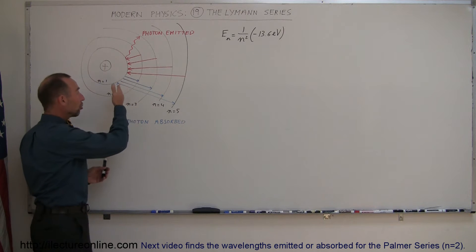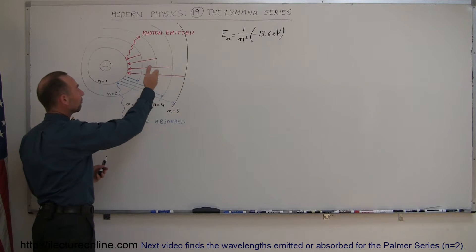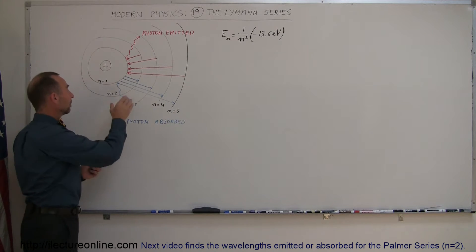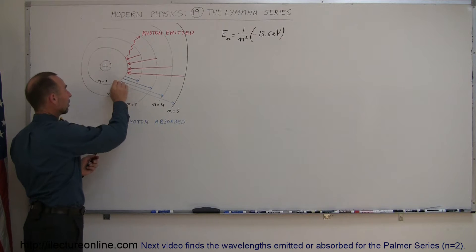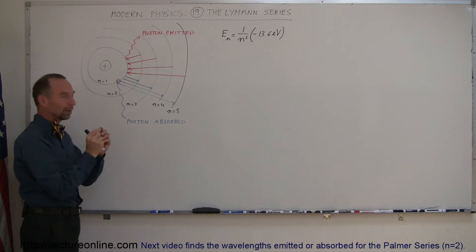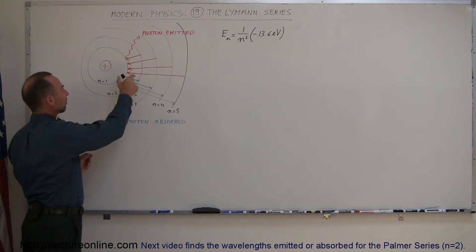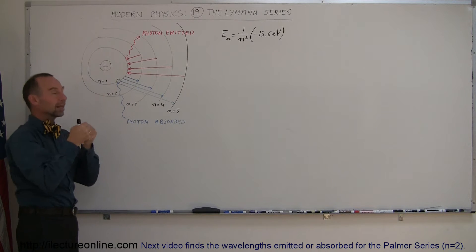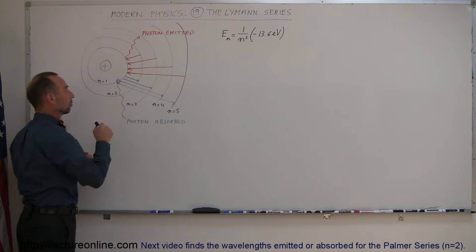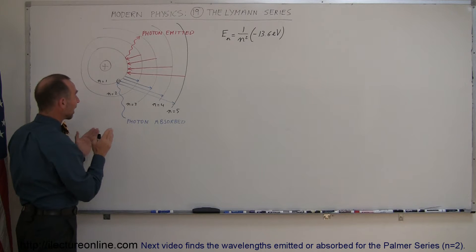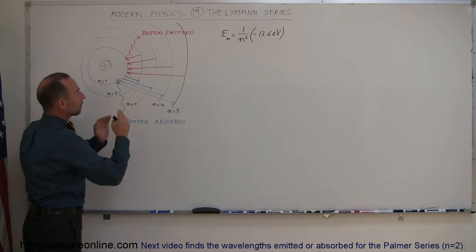It turns out the electron can jump to higher energy levels and fall back down to lower energy levels. In order to do so, if an electron exists in the innermost energy level and a photon comes along with the right precise amount of energy representing the difference in energy between these orbits, the electron can absorb that energy and use it to jump up to the next orbit — but only if the energy is exactly equal to the energy difference between these orbits.